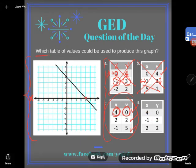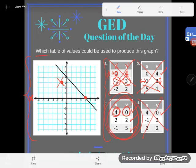So let's see, D had (4,0), that was on the line, so that point checked. It had (-1,3), so negative 1, 1, 2, 3. There it is, that point's not on the line. No wonder D is not the right answer.